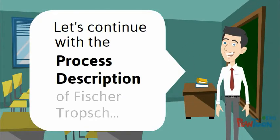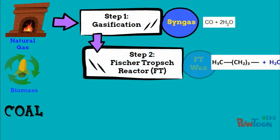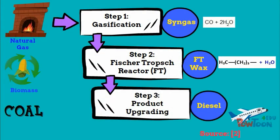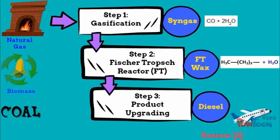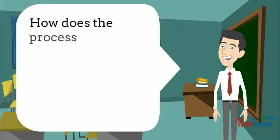Let's continue with the process description of Fischer-Tropsch. Step 1: Gasification. Step 2: Fischer-Tropsch Reactor. Step 3: Product Upgrading. How is this process realized in industry?